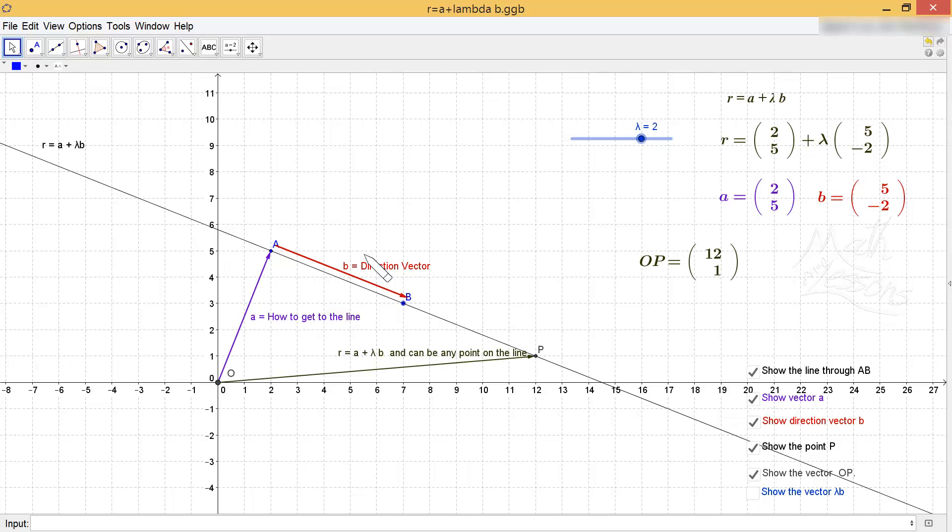So we can get an equation for our line. And what we do is we use this idea that our vector from O to P will equal A, which is the vector I get from the origin to the line, plus lambda lots of B.